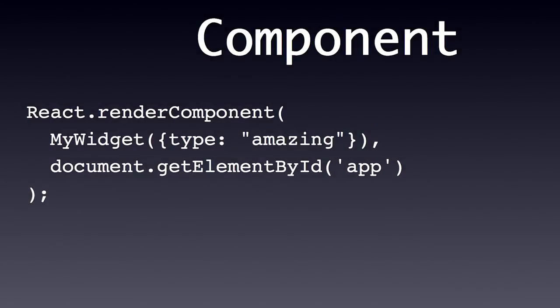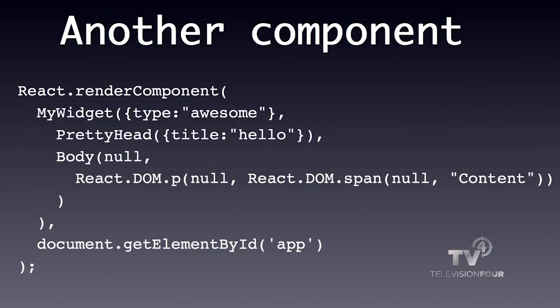Let's look at a component. You create your component called MyWidget, then you say React render this component, pass it some properties, and put it here in the DOM. That's pretty much the only time you have to worry about the DOM — just telling React 'this is your play area, do your thing over there.' These components can contain other components, so MyWidget can have a head and a body. You can always use HTML — there are wrappers for every HTML element available from React.DOM.